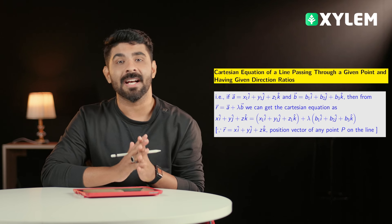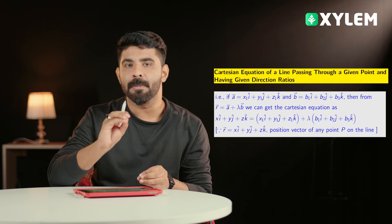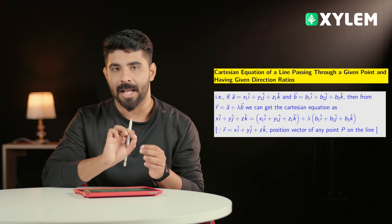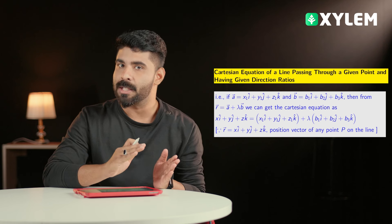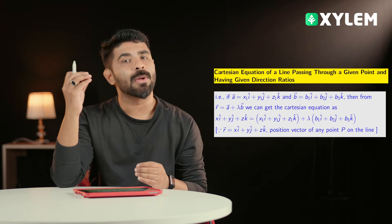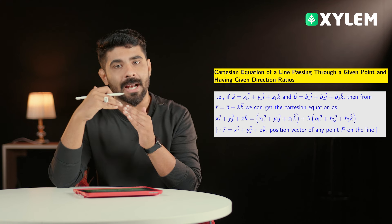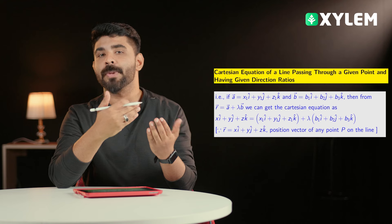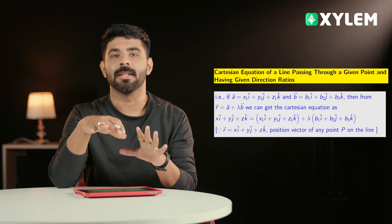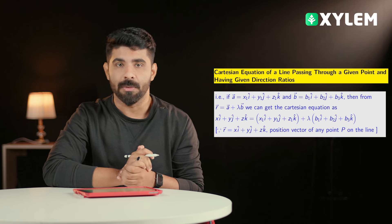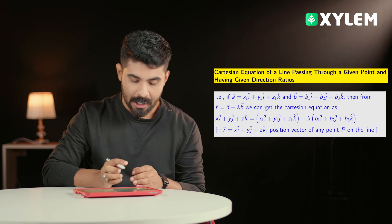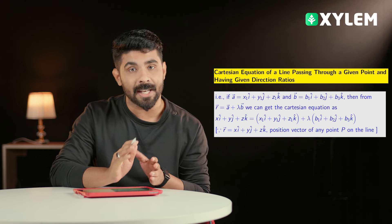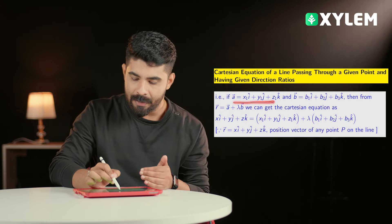Next is the Vector Equation or Cartesian Equation of a line, which is very important. The vector equation is: Vector R equals Vector A plus Lambda times Vector B. These components are Vector A and Vector B, and we need to find Vector R from this equation.